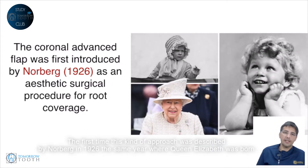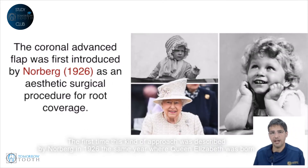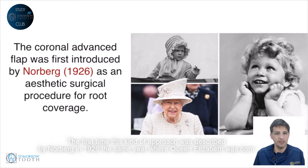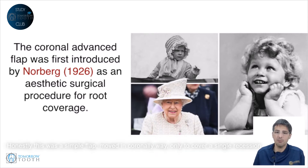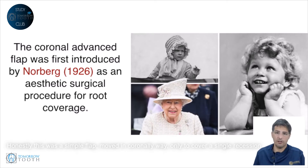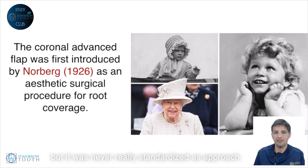The first time this kind of approach was described by Norberg in 1926 — the same year in which Queen Elizabeth was born. Honestly, this was a simple flap moved in a coronal way only to cover single recessions, but it was never really standardized as an approach.